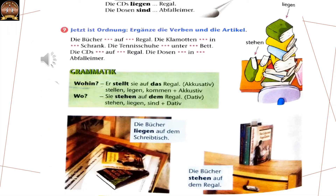Übung neun. Jetzt ist Ordnung — now there is order, meaning everything is in its place. Again we have to use the previous dialogue to fill the blanks. What do we have to fill? The verbs and the articles — Ergänze die Verben und die Artikel. Die Bücher stehen auf dem Regal. Die Klamotten liegen in dem Schrank. Die Tennisschuhe stehen unter dem Bett. Die CDs liegen auf dem Regal. Die Dosen sind in dem Abfalleimer.